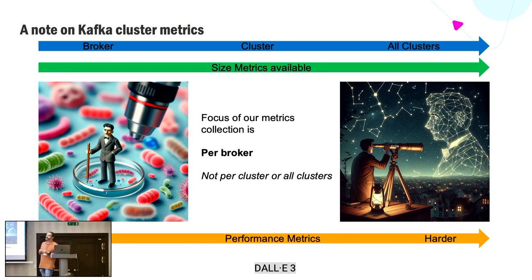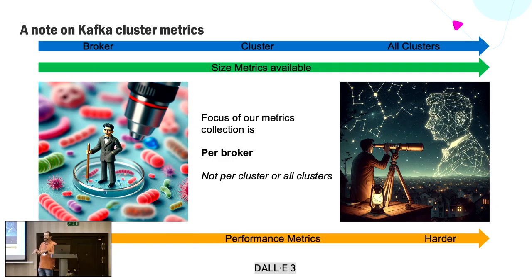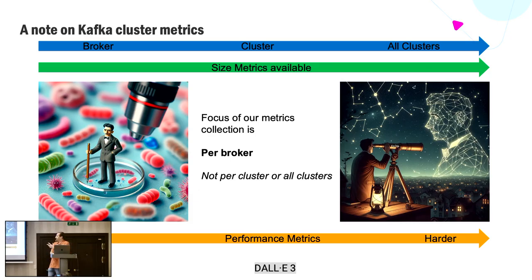A note about Kafka cluster metrics: the focus of our operational metrics is really on Kafka brokers — the broker-level metrics — and that's great for keeping Kafka clusters running for our customers. But I was interested more at the cluster level, which we have some metrics for but not as much. Performance metrics over all our clusters turned out to be something not collected by default and not particularly easy to get, so it was a lot harder to get that data.